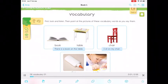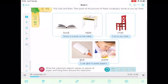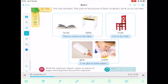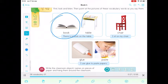Vocabulary. First, look and listen. Then point at the pictures of these vocabulary words as you say them. Book. Book. What is the book? Okay. Table. Table. There is a book on the table. No te olvides repetir.